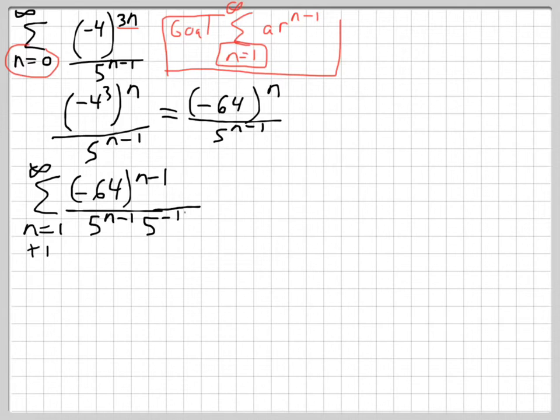So the value on the bottom is now n minus 2. But that's okay because it's still in the correct form. We have n minus 1. Let me circle this in red.